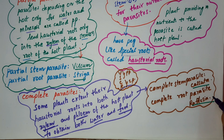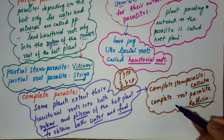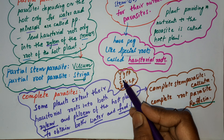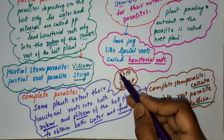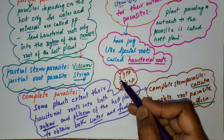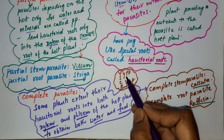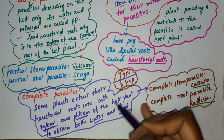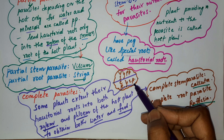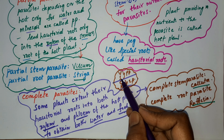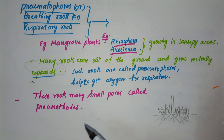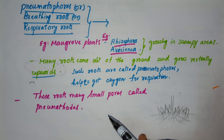Examples: complete stem parasite - Cuscuta; complete root parasite - Rafflesia. Summary: stem parasites and root parasites; partial parasites depend on xylem; complete parasites depend on xylem and phloem. Examples include Viscum, Striga, Cuscuta, and Rafflesia. Next: pneumatophores or breathing roots, also called respiratory roots.